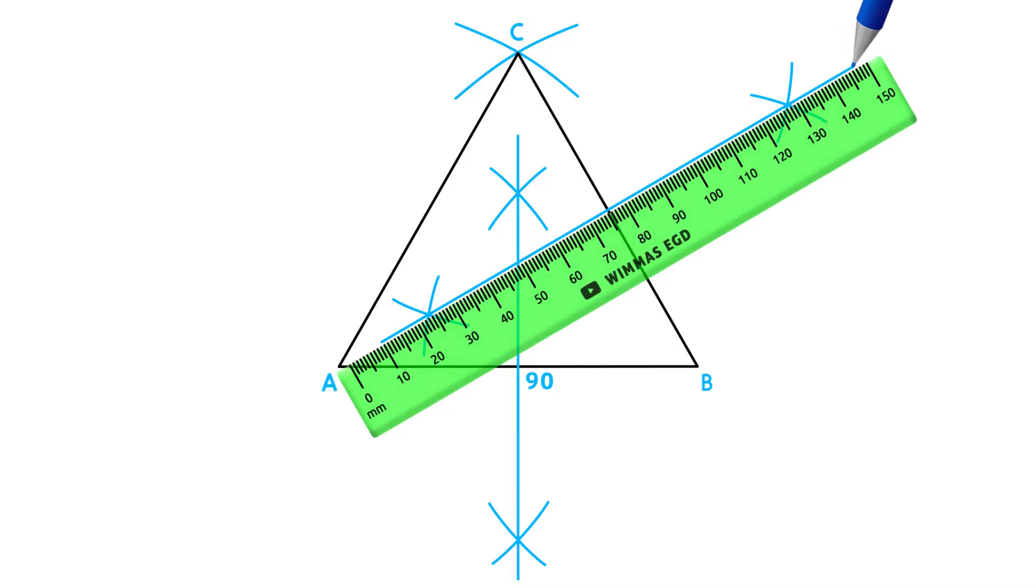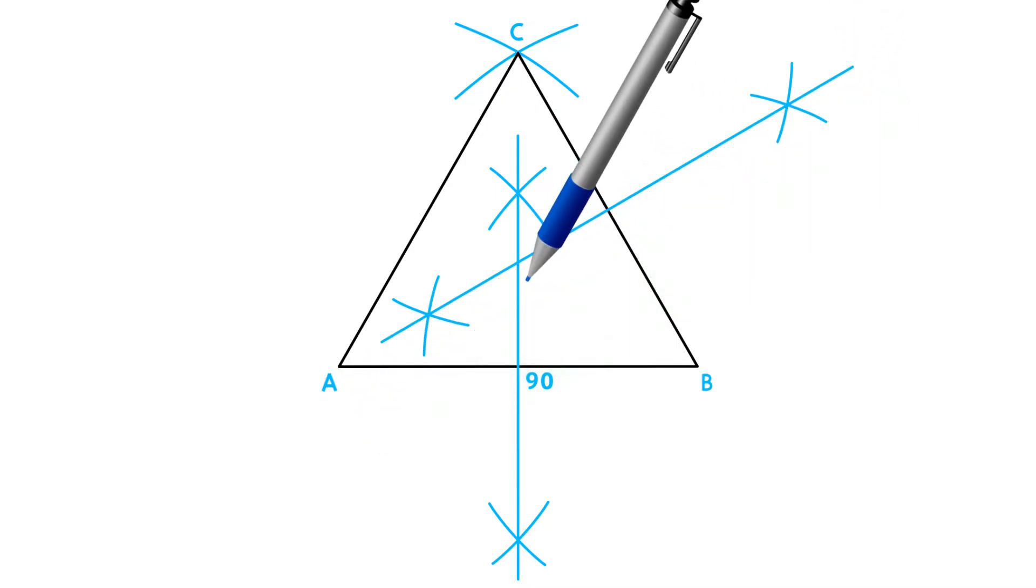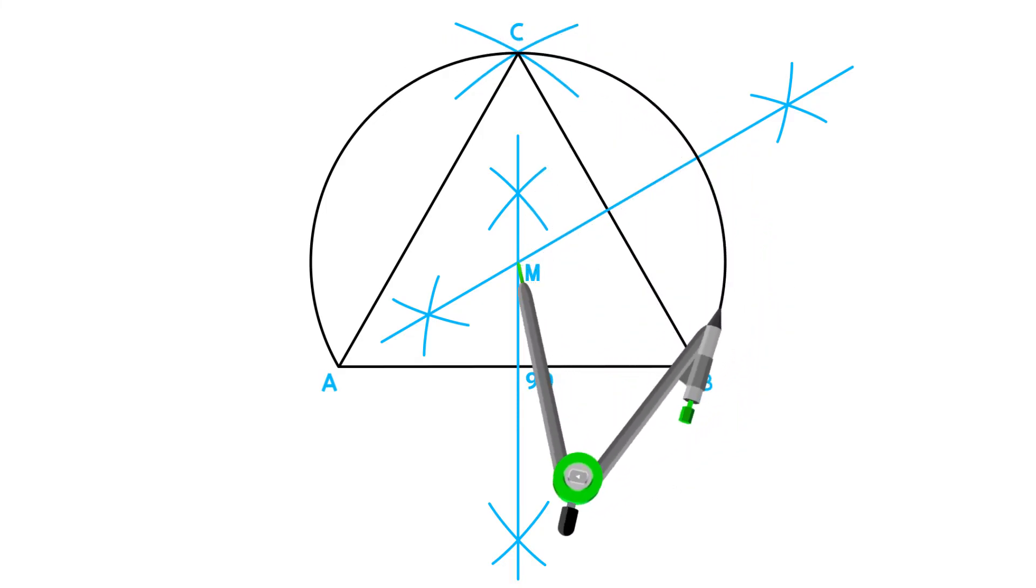Where our two perpendicular bisectors intersect is our circumcenter, or circle center point. Place your compass on this point and adjust it to any one of your vertices or angles and draw your circumscribed circle.